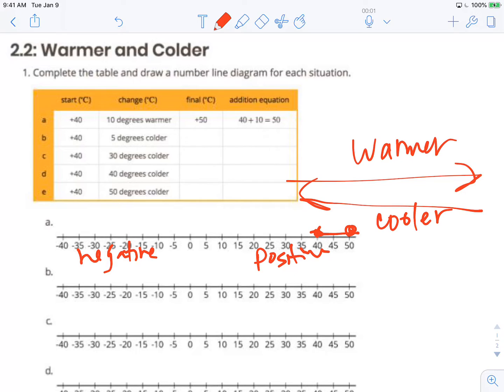For letter B we're going to start again at positive 40. So 40 to the right of 0 and it's going to get 5 degrees colder. So I need to move to the left when I get colder temperatures. So 5 degrees colder. We're going to end at positive 35.